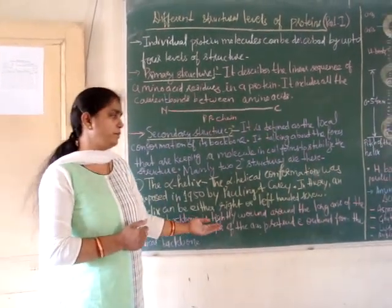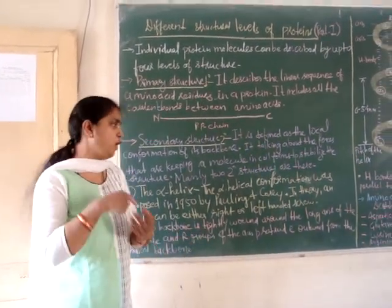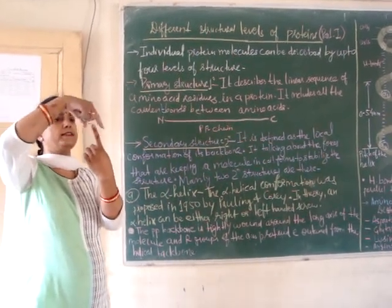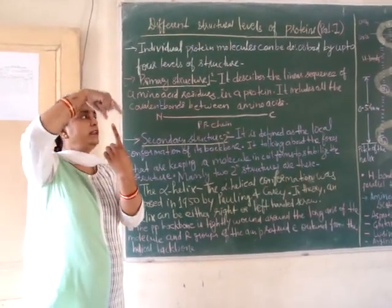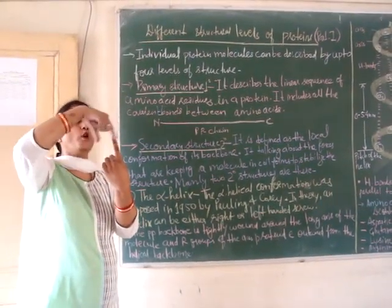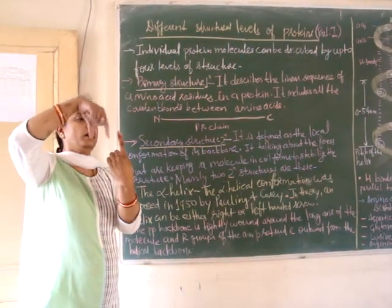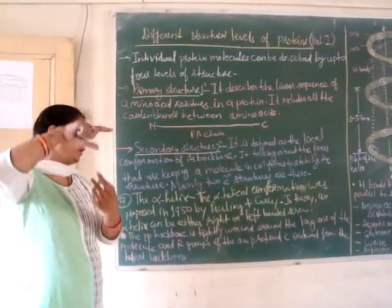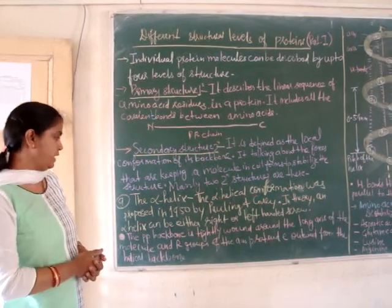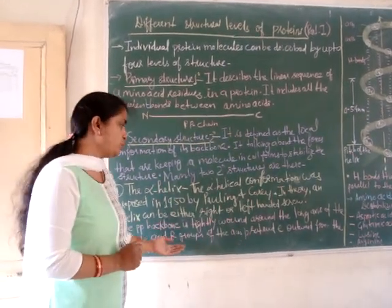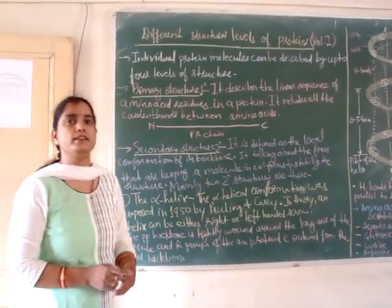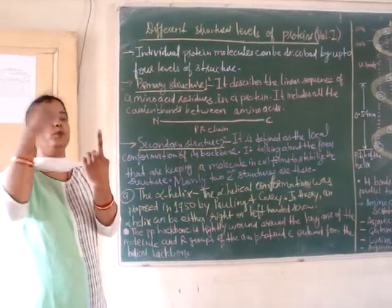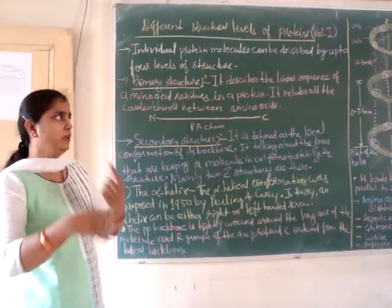The polypeptide backbone is tightly wound around the long axis of the molecule. The linear polypeptide chain is wound around this axis in either a right-handed or left-handed manner. The R-groups of the amino acids protrude outward from the helical backbone, towards the outside.